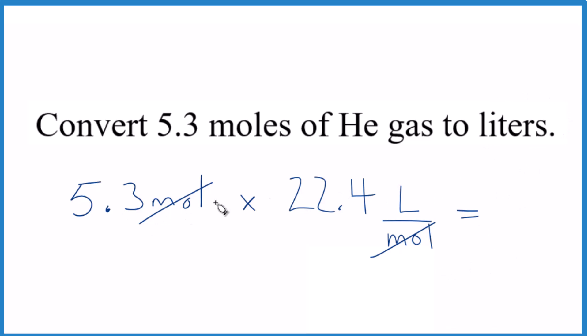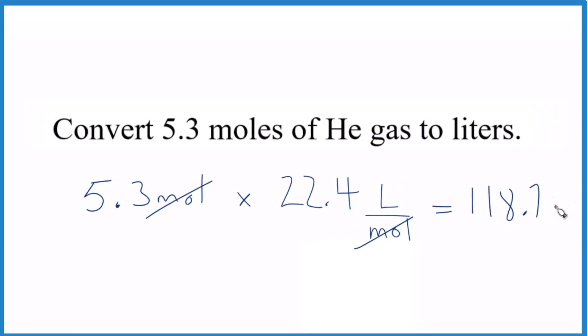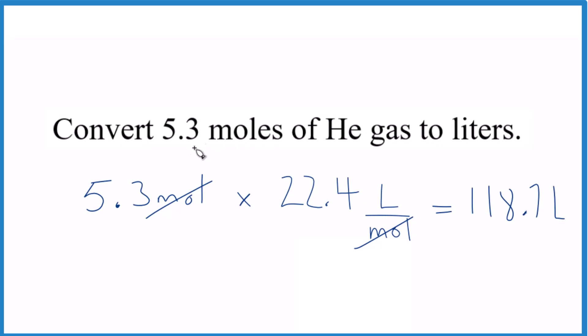So 5.3 times 22.4 liters, that gives us 118.7. The units are going to be liters. So that's how you convert from moles of helium gas to liters, or really moles of any gas, any ideal gas, to liters.